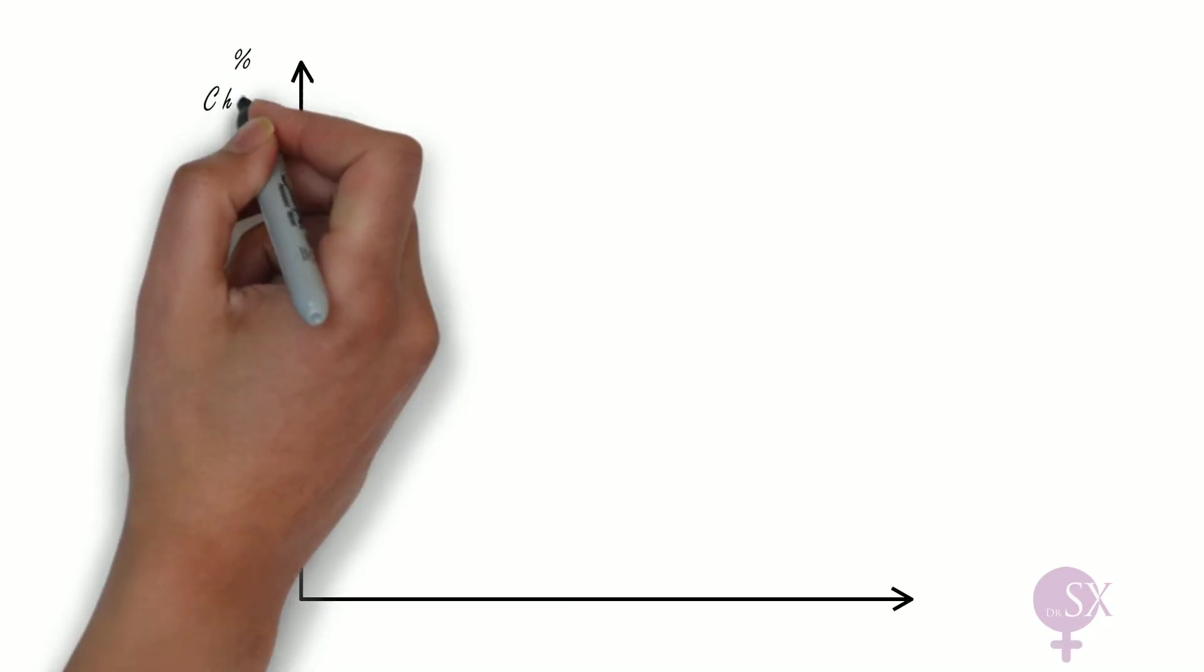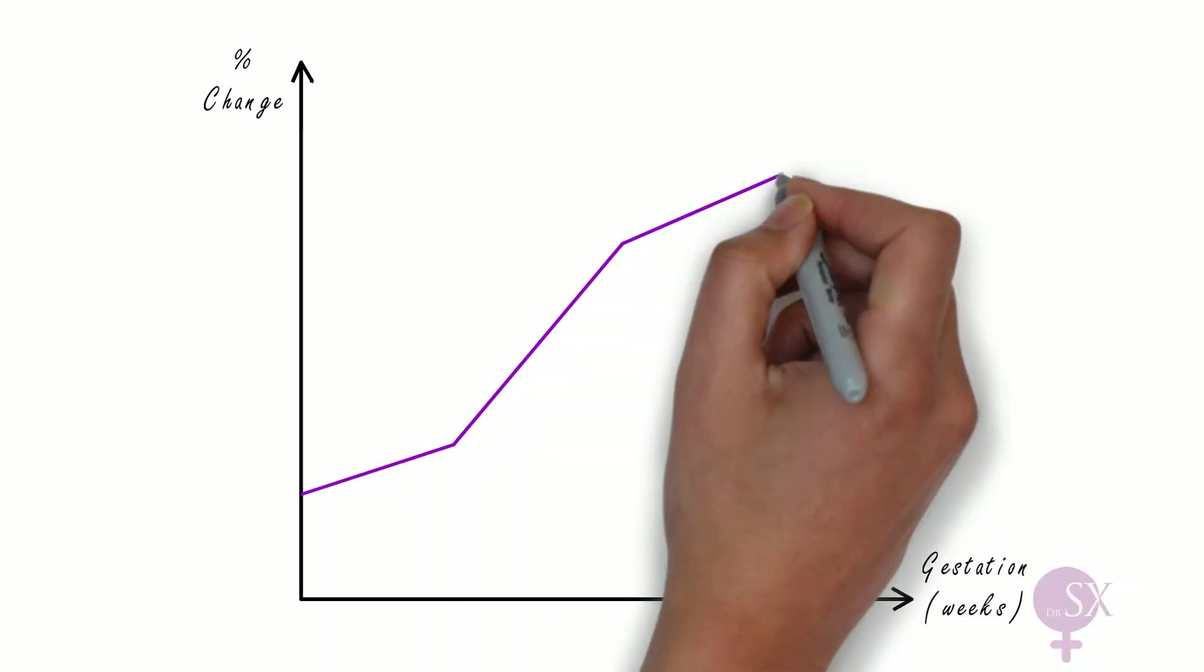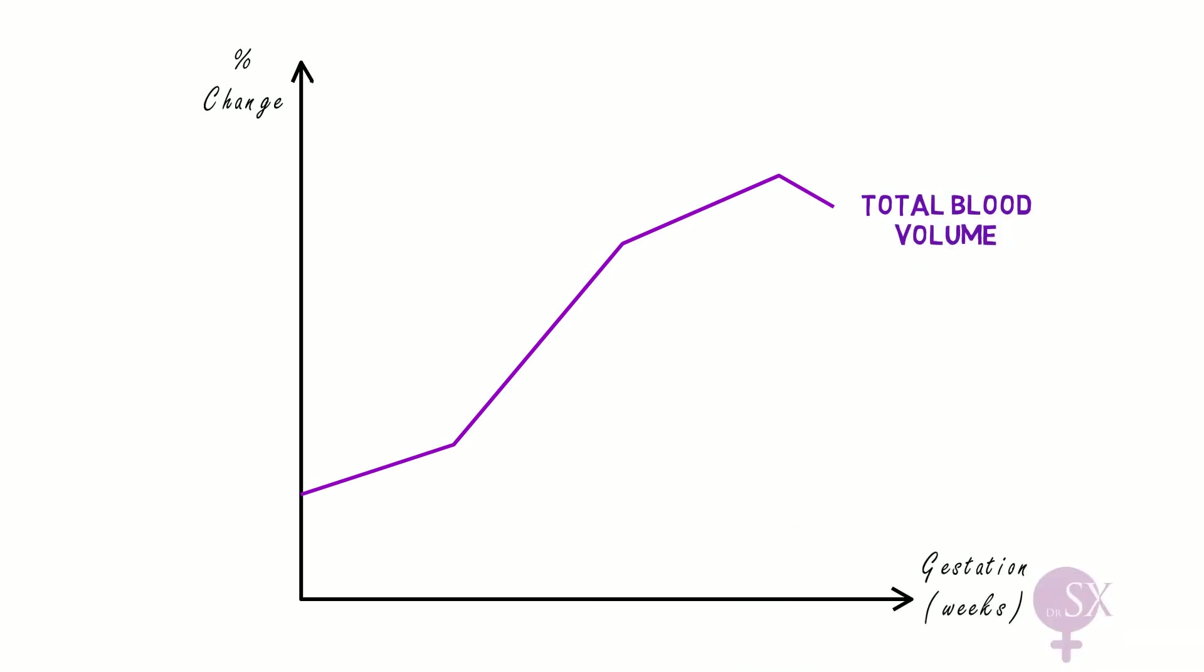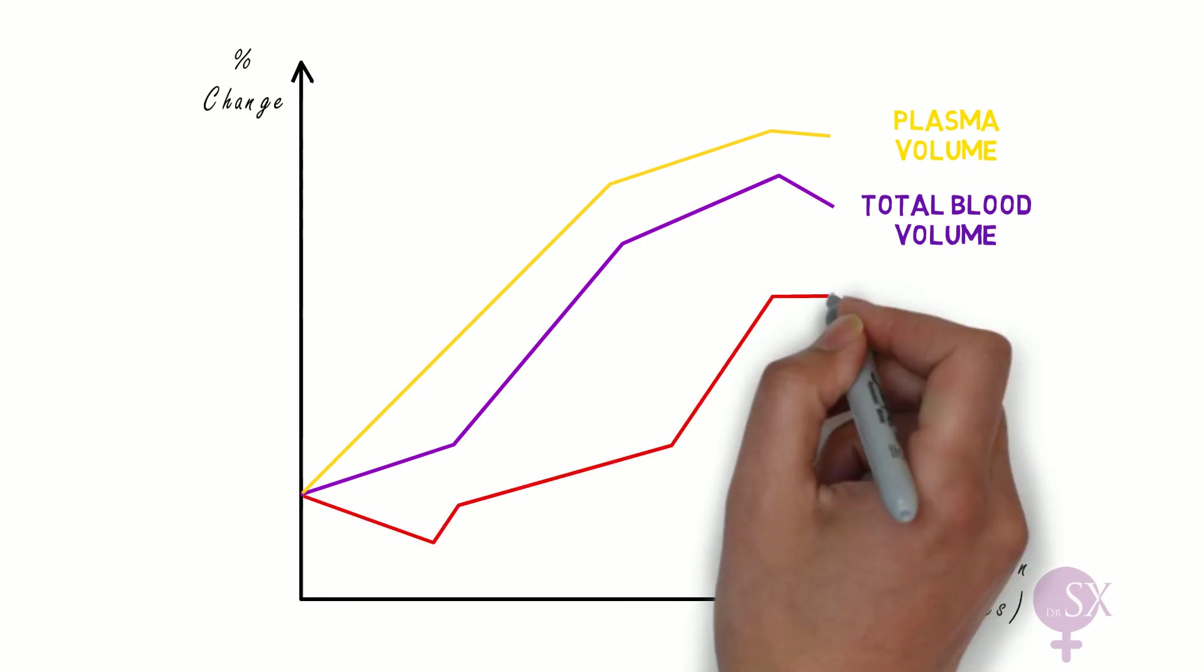So explaining this again, we've got a graph here showing percentage change against gestation. As we can see, we have a progressive increase in the total blood volume throughout the pregnancy. There is greater percentage increase in the plasma volume however in comparison to the red cell mass.